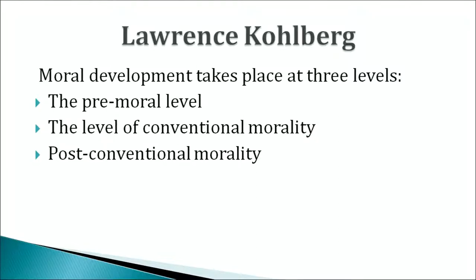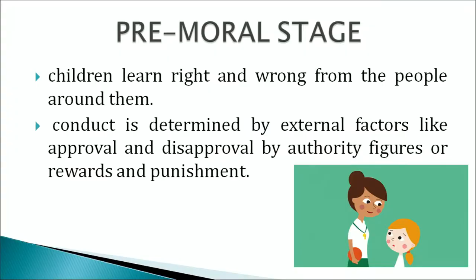According to Lawrence Kohlberg, moral development takes place at three levels. The first is the premoral level, the second is the level of conventional morality, and the third is post-conventional morality. At the premoral stage, children learn right and wrong from the people around them. Their conduct is determined by external factors like approval and disapproval by authority figures, or rewards and punishments. A child's behavior is oriented towards obedience and punishment. As the child approaches middle childhood, the capacity to understand relationships and moral codes expands and continues to grow in adolescence.